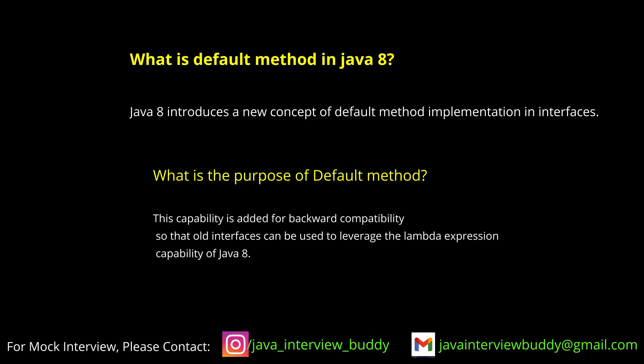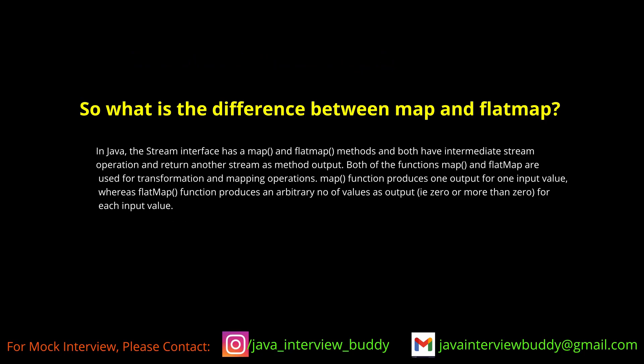A functional interface is a specific thing — in general, any interface can have a default method, whether it is a functional interface or non-functional. A functional interface is one that has a single abstract method, and that abstract method defines what the interface does. Regarding map vs flatMap: if you have a deep-nested list and want to convert it into one big flat list, you can use flatMap. In the case of map, you cannot do that conversion, but with flatMap you can.